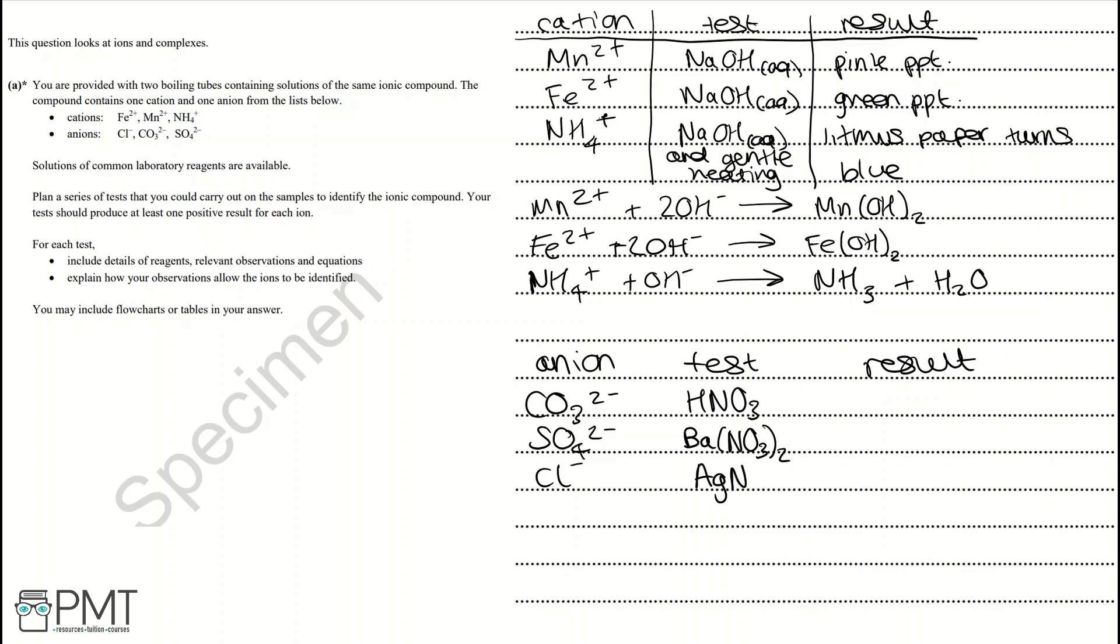We're going to write the results. The carbonate ion will react with nitric acid and it will effervesce, which means bubble. Both the sulfate and the chloride ions will react to form white precipitates. Now we need to write the equations.